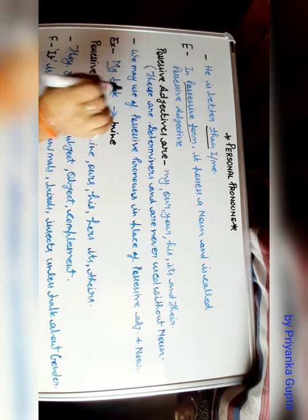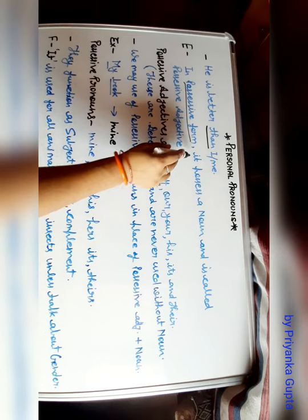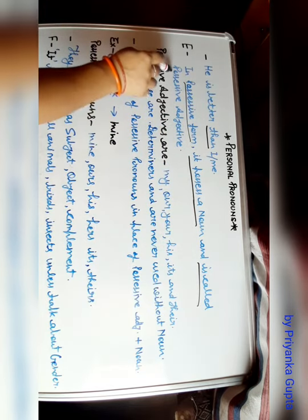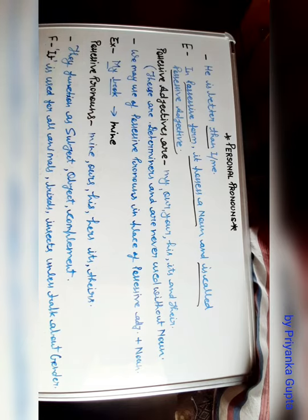Now come to the E point. In possessive form, let's see. In possessive form, it possesses a noun and is called your possessive adjective. In the case of possessive form, it possesses a noun. In personal pronoun, when we use it with a noun, if it is possessing a noun, that's why it will be called your possessive adjective.